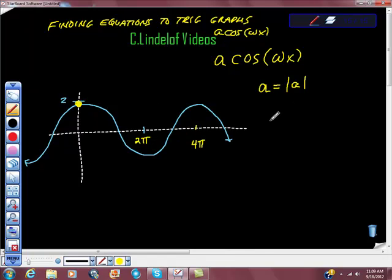Its amplitude is 2, so that gives us this much of it so far: 2 cosine omega times x.